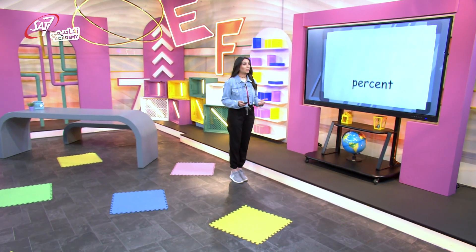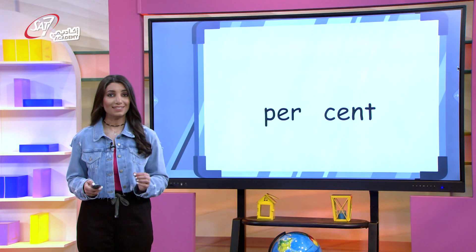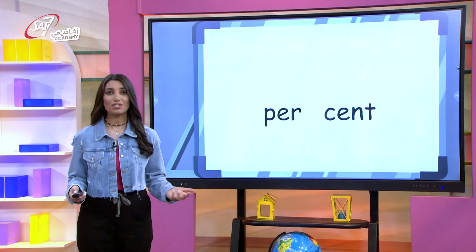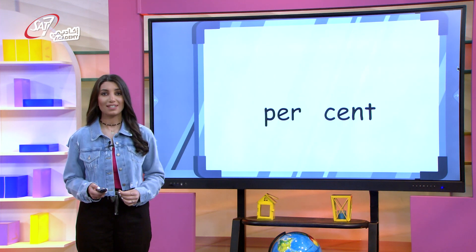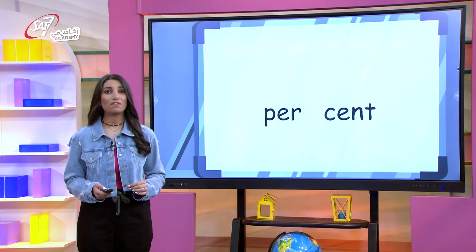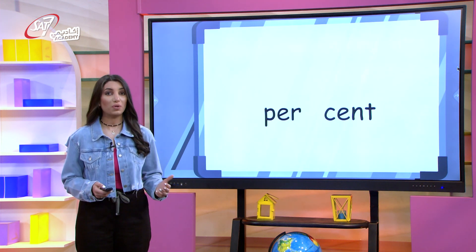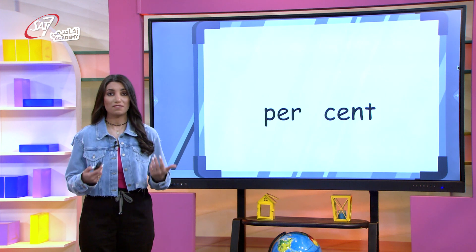What does the word percent mean? Let's divide it into two parts. Have you seen the term cent before? A century, for instance, is 100 years. Cent is used to refer to 100. So 40% means 40 per 100, or 40 out of 100.